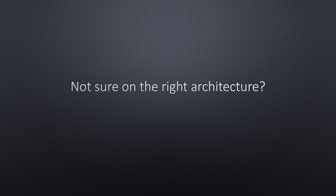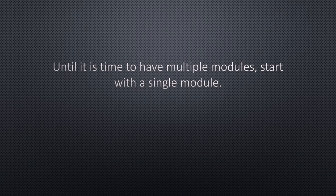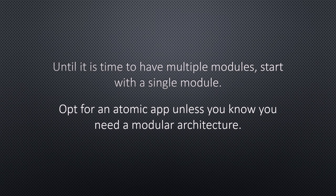I think it's important to make a distinction: even in an atomic or single-purpose app, we still write in terms of modules within the application. What we're talking about here is modular deployments. No matter how you architect an app, it's always really important to have good clean separation of concerns in code and best development practices. If you're not sure on the right architecture, I would recommend that until you have a need for multiple modules, just start with a single module. Opt for an atomic app unless you know you need a modular architecture from the get-go.